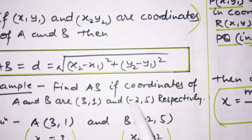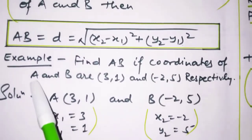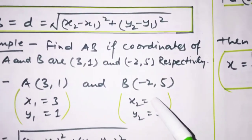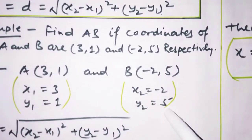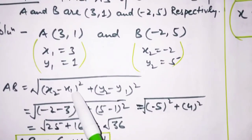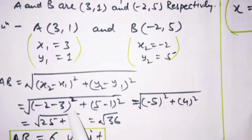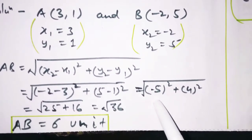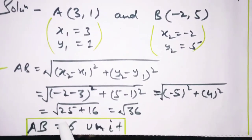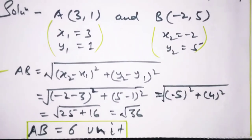Find AB if coordinates of A and B are (3,1) and (−2,5). To 3,1 A ka coordinate hai jisko hum x1, y1 let kar lenge. Aur B ka coordinate hai −2,5 jisko hum x2, y2 let kar lenge. Ab distance formula hum lagate hain: √((x2−x1)² + (y2−y1)²). Value put karke calculate karte hain — under root 36 aaya, to 6 unit likhenge. Plus-minus mein hum minus nahi lete kyunki distance kabhi bhi negative nahi hoti.